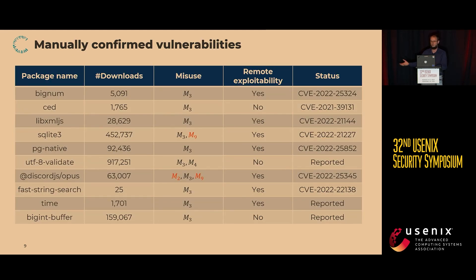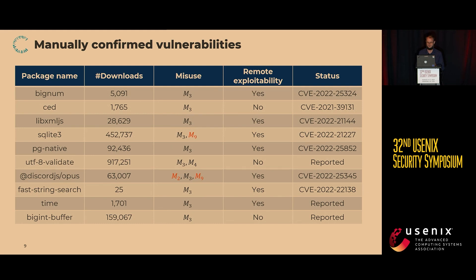We showed actual code that could lead to crashes or uninitialized values, and most maintainers were quite supportive — they said this was very interesting, didn't expect it, and acknowledged it was caused by the API. They either fixed it and issued a CVE, or some decided not to. But the majority were very responsive.